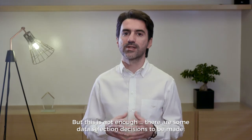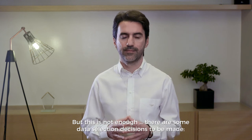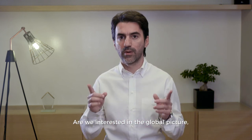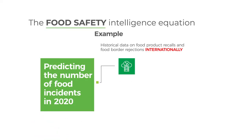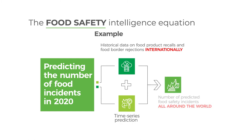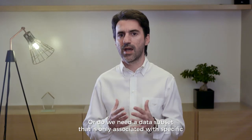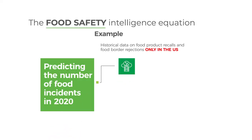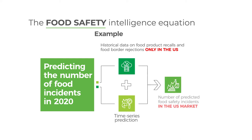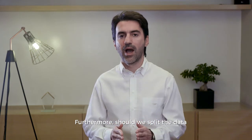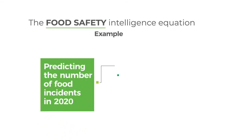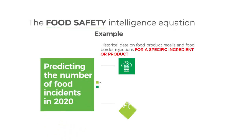But this is not enough. There are some data selection decisions to make. Are we interested in the global picture, using a very large global dataset to build a generic food safety predictor? Or do we need a subset of the data only associated with specific geographical regions of interest, such as the United States or the European Union? Furthermore, should we slice the data according to the product categories they refer to, removing irrelevant product recalls and rejections so that they do not influence the prediction?